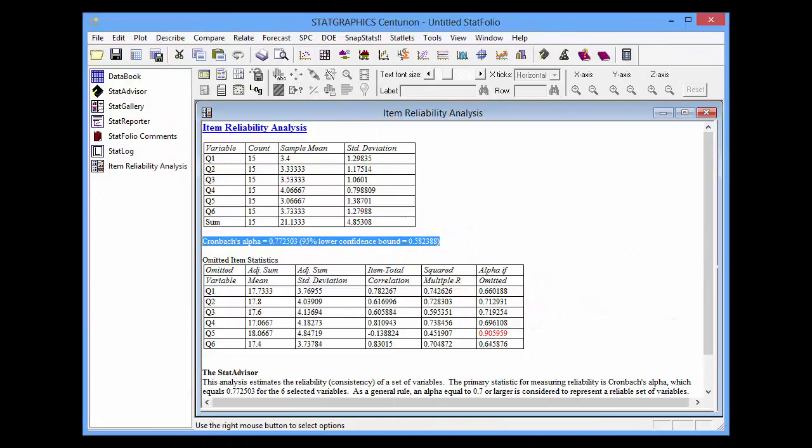Returning to StatGraphics, you'll notice that Cronbach's alpha is, in fact, greater than 0.7, although the lower 95% confidence bound is not.